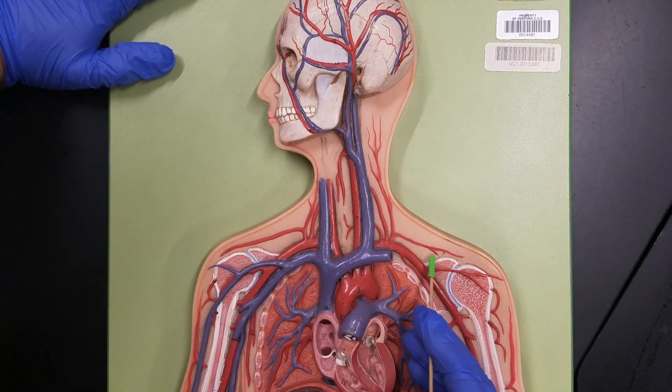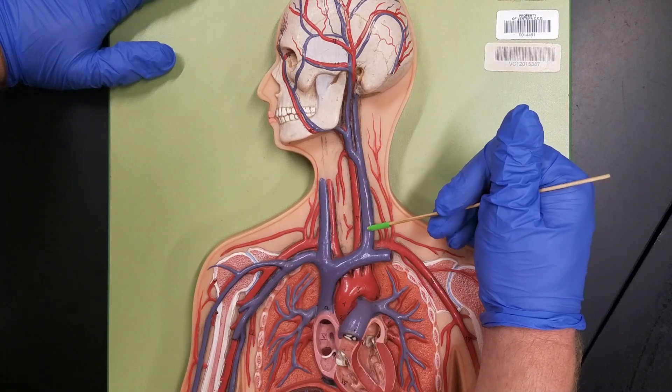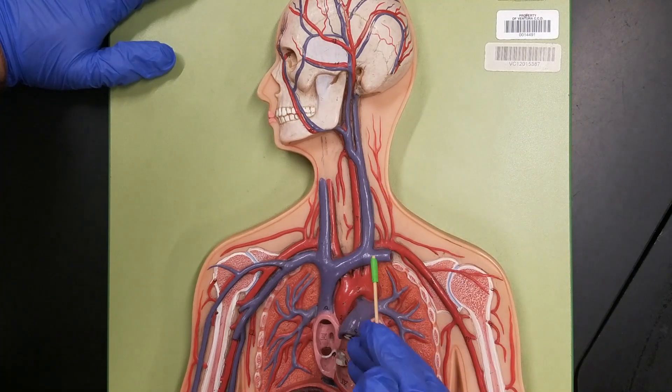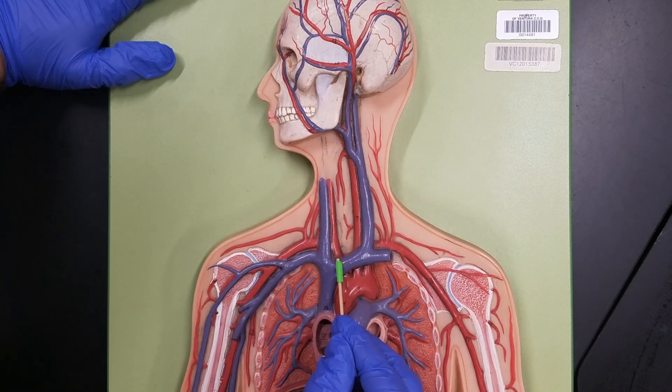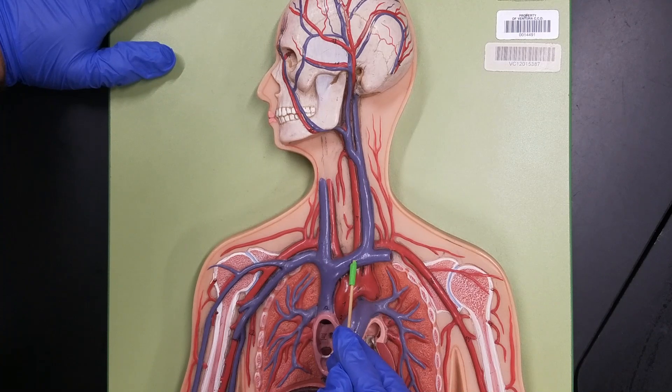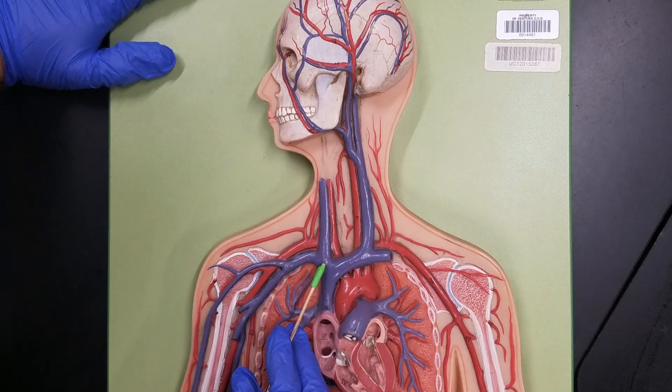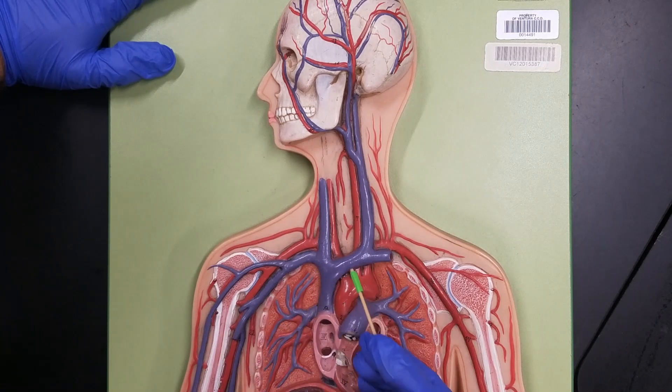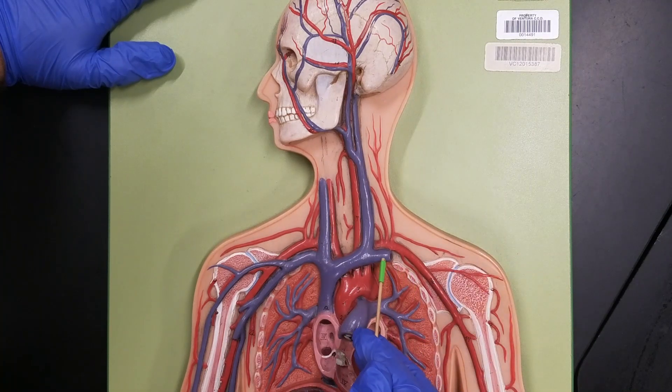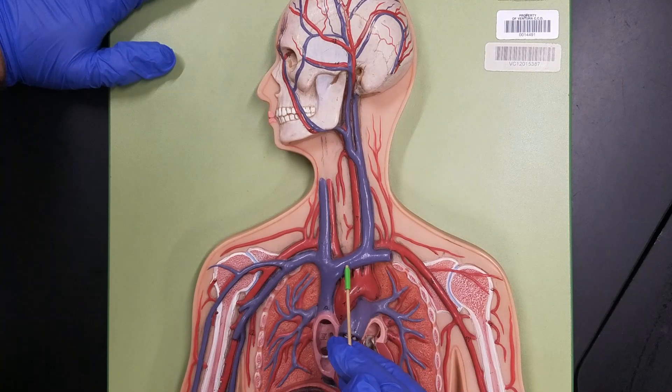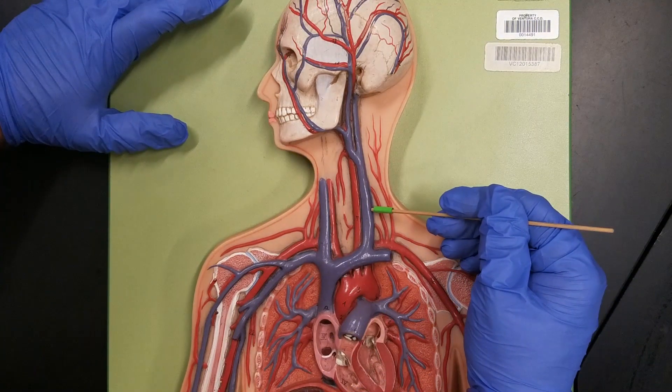Now, as my subclavian comes over, I can see that it's going to merge with my internal jugular vein. That forms this new vein, which we refer to as a brachiocephalic vein. So this would be my left brachiocephalic vein, and this is my right brachiocephalic vein. Brachio refers to brachium, the arm. That's the region that our subclavian vein is draining, and cephalic refers to head. That's the region our internal jugular vein is draining.